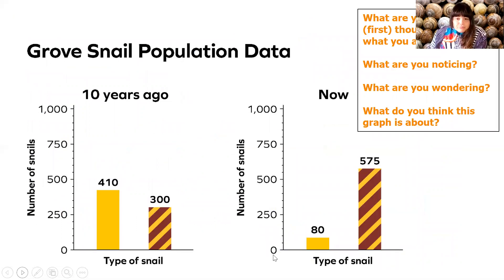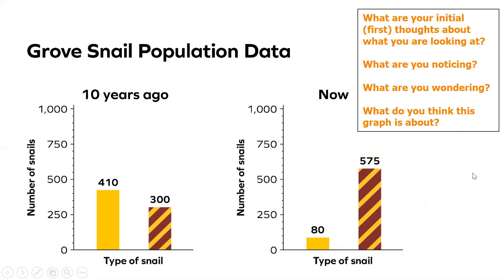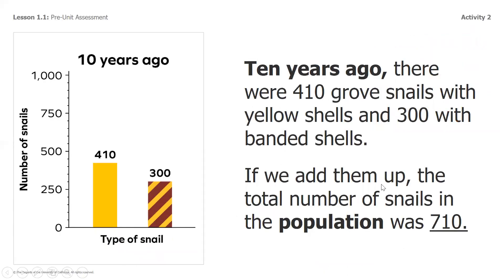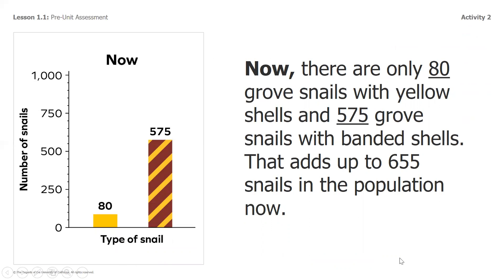Here's the data we are going to look at. The snail population is from 10 years ago and also from now, so we're comparing the two. First — what do you see? What are your initial thoughts? Look at the colors, the differences, whether numbers are going up, and whether they have the same scale. Ten years ago there were 410 grove snails with yellow shells and 300 with banded shells — a total of 710. Now the population is only 655, with only 80 yellow-shelled snails and 575 banded-shelled snails.